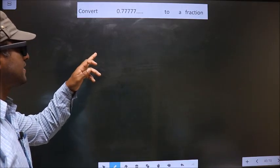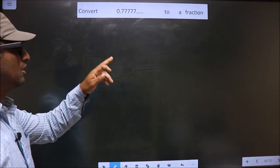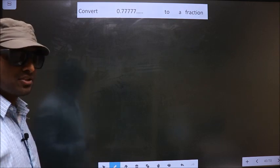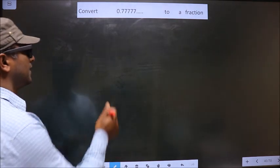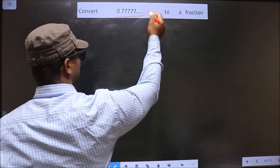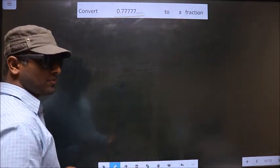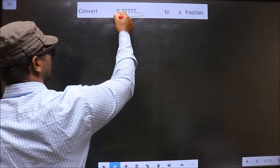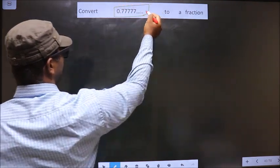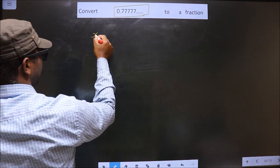Convert 0.777 repeating to a fraction. Here I have to convert a recurring decimal, that is 0.777 and so on, to a fraction. How do we do it? First, whatever we have to convert, take that to be x.